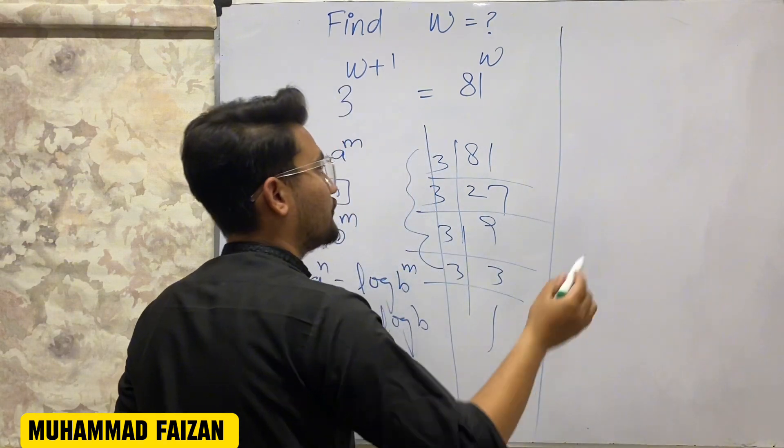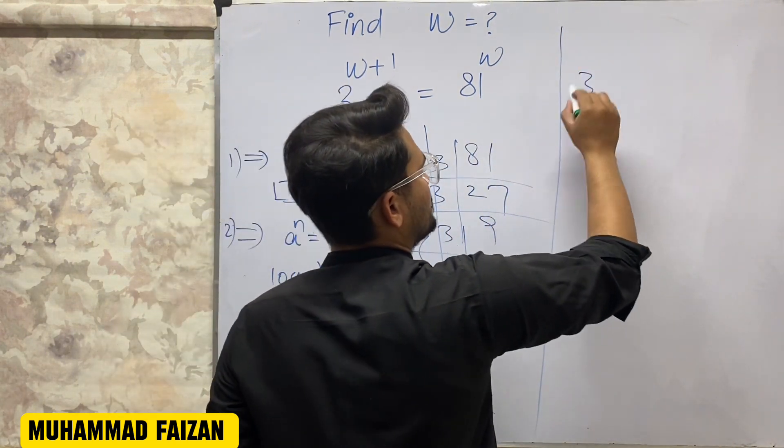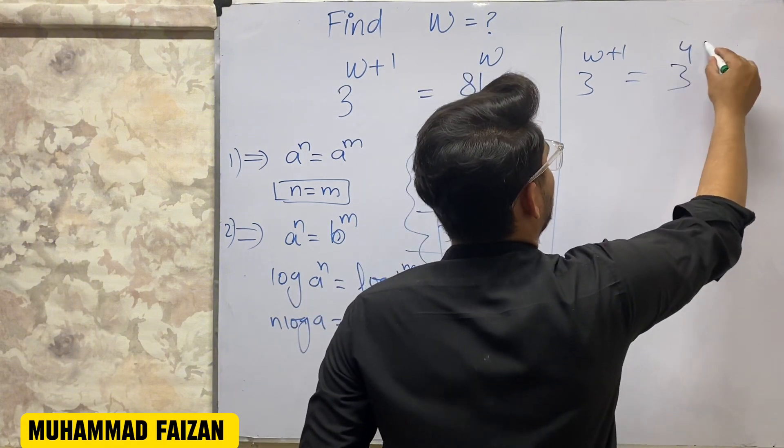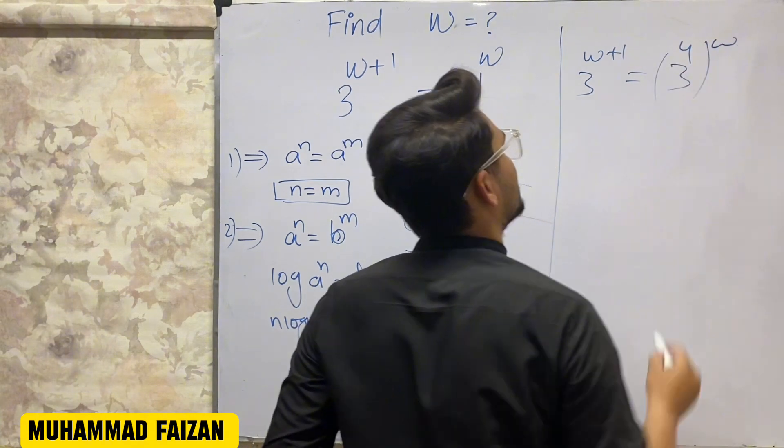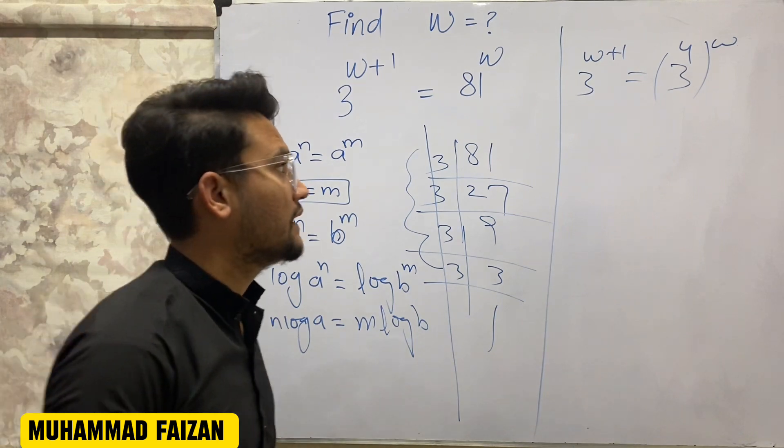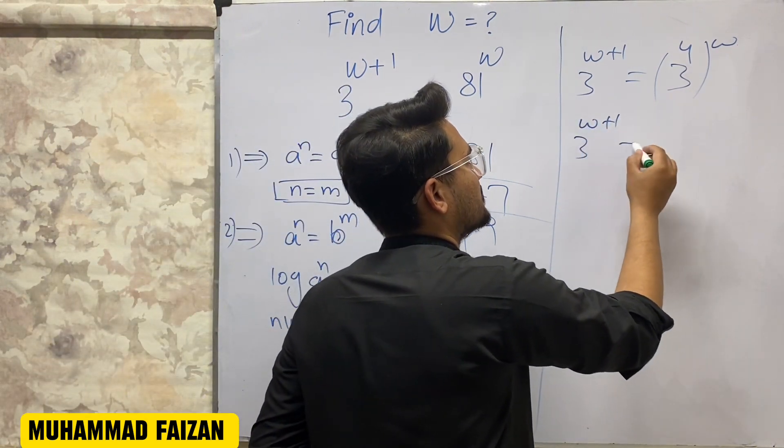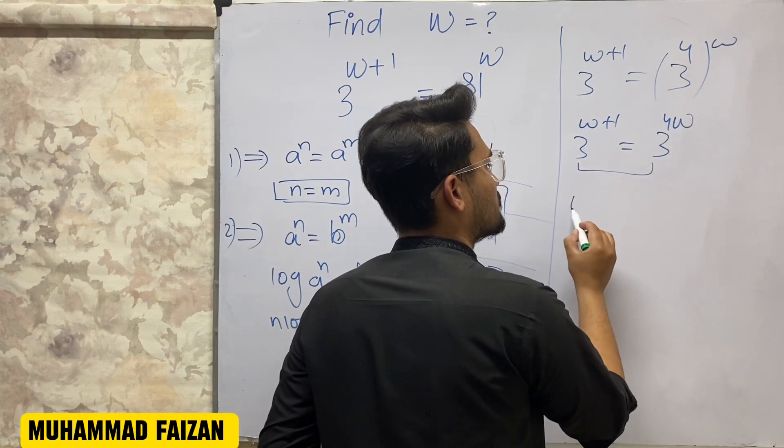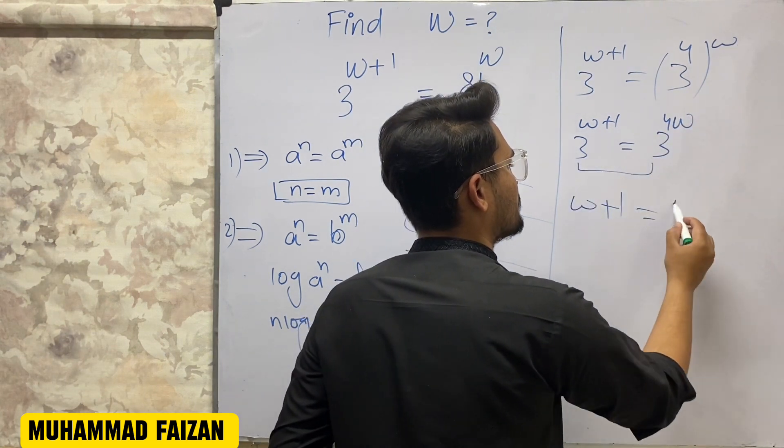equals 3 to the power of 4W. Another step: 3 to the power W plus 1 is equal to 3 to the power 4W. The bases are the same, so W plus 1 is equal to 4W.